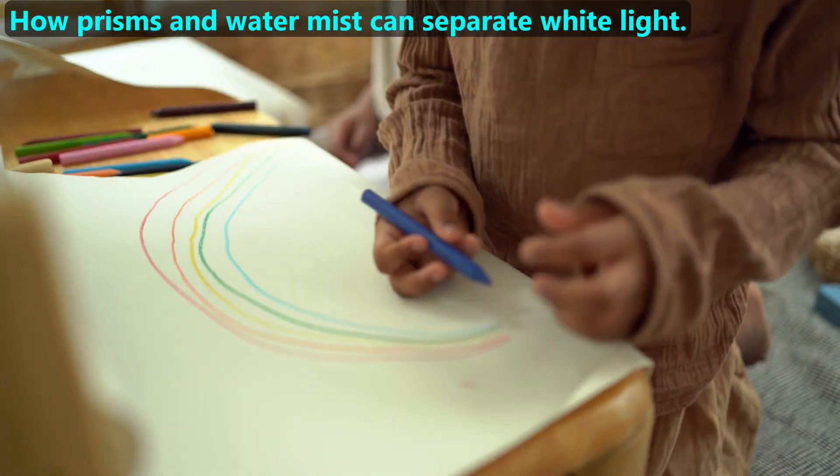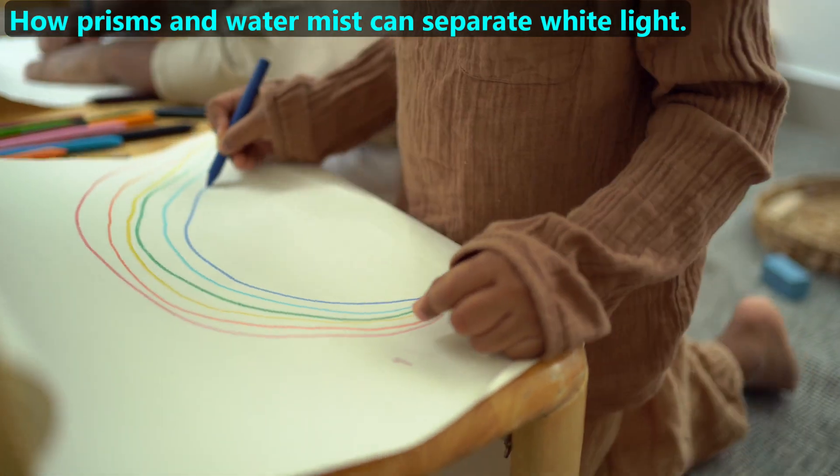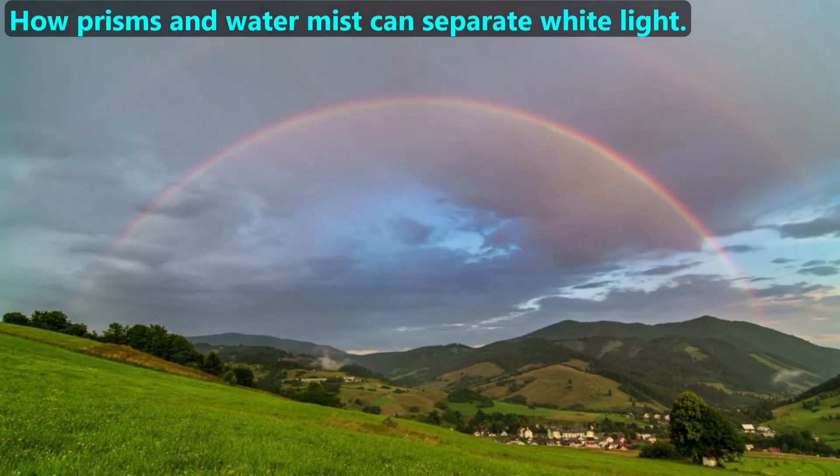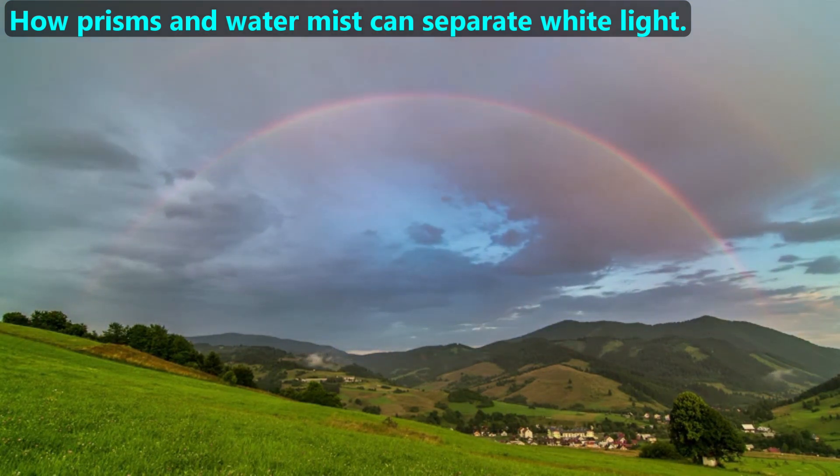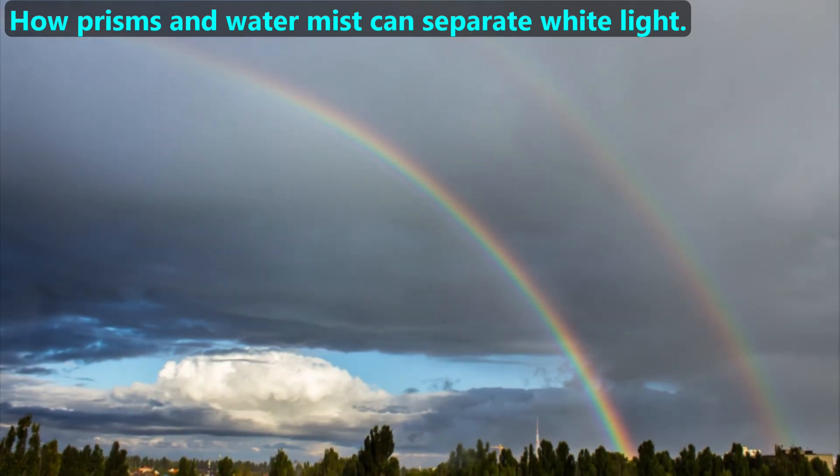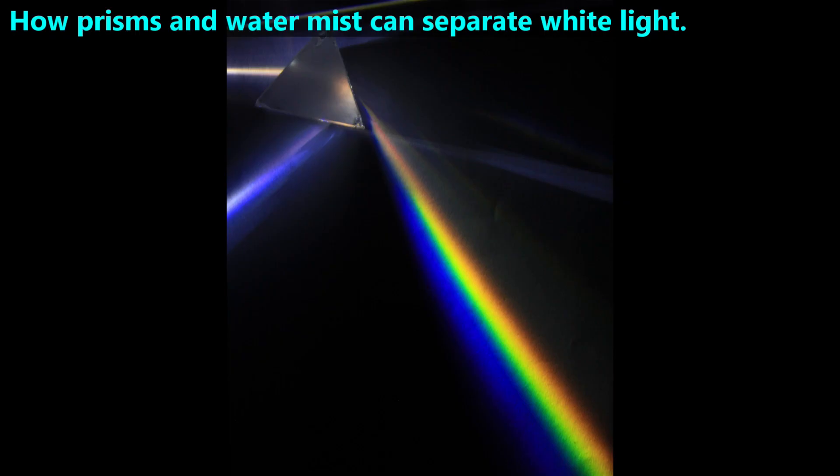Next, we'll discuss how prisms and water mist can separate white light into many colors. If you've ever seen a double rainbow, you may have noticed that the colors are in the same sequence, except reversed. For example, one edge is red, the other edge is violet, and green is near the middle. This sequence pattern is the same we see with prisms.